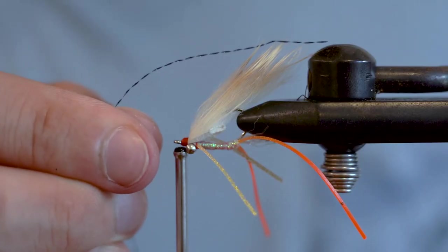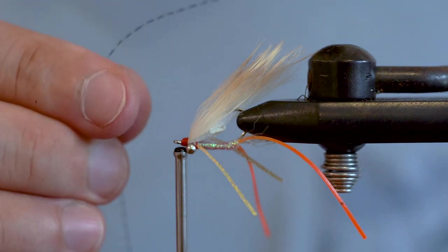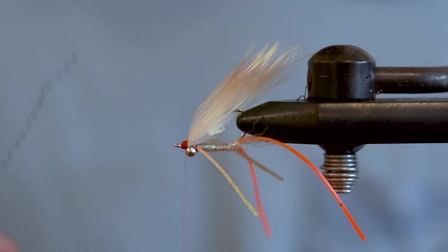The final material I'm going to tie in is a bit of black crystal flash which will create antenna and it'll get a little bit more contrast to the fly.